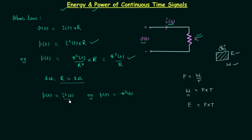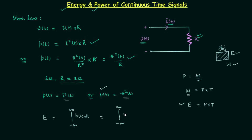We have instantaneous power equal to I²(t) or V²(t) — you can take either case. I will consider instantaneous power as V²(t) for our derivation. The total energy is therefore equal to the integration from minus infinity to infinity of V²(t) dt. As P(t) equals V²(t), we can write the total energy as the integral from minus infinity to infinity of V²(t) dt.